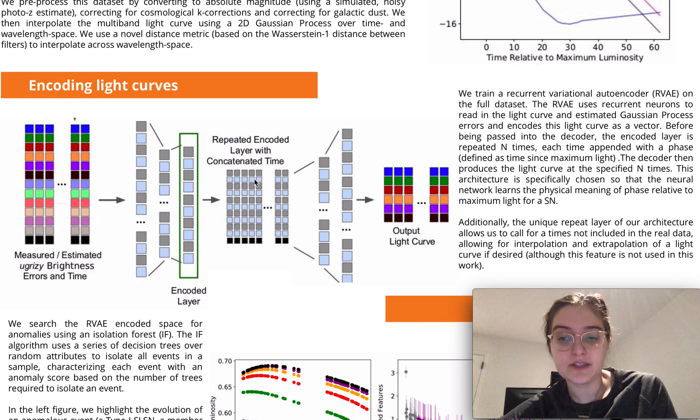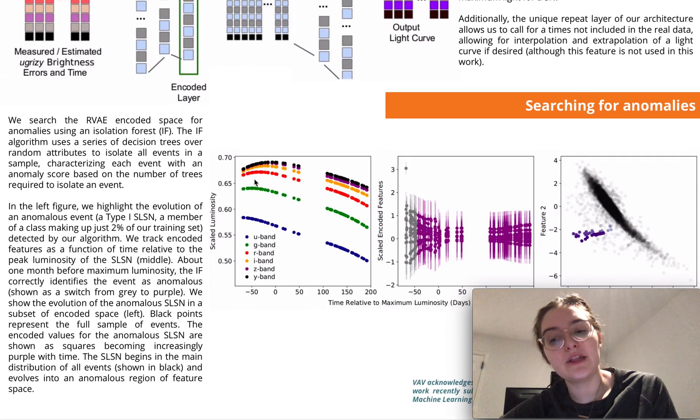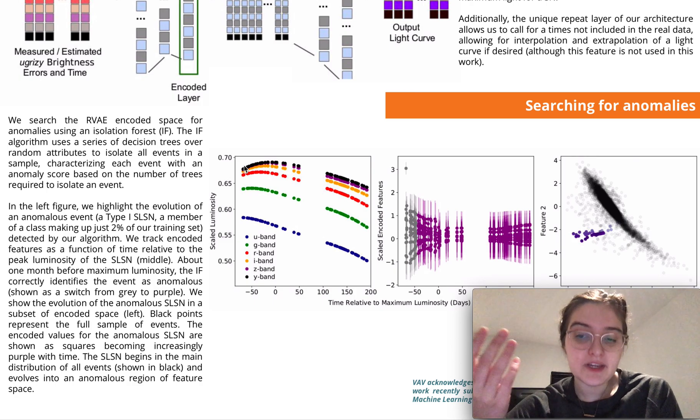So let me show you just one example of such an anomalous event where this is something called a superluminous supernova. I know the underlying physics because our data is from a simulated data set and I know that the class this comes from is in fact just two percent of the training set, so to me scientifically this is an interesting anomalous event.